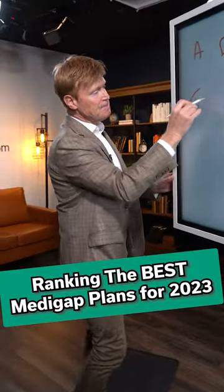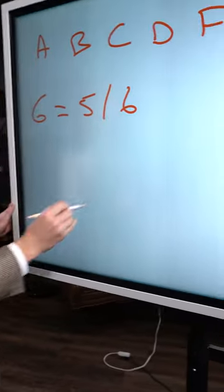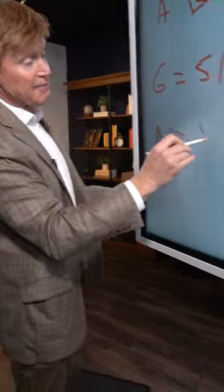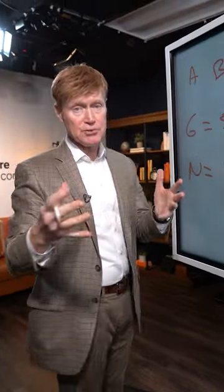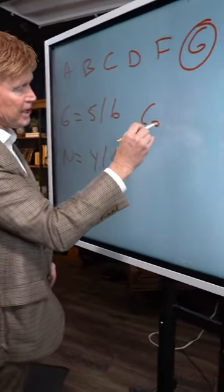The difference is the G plan covers five of the six Medicare gaps. The N plan is going to cover four of the six Medicare gaps. So what you have to do is decide how much risk you want and then decide upon a company.